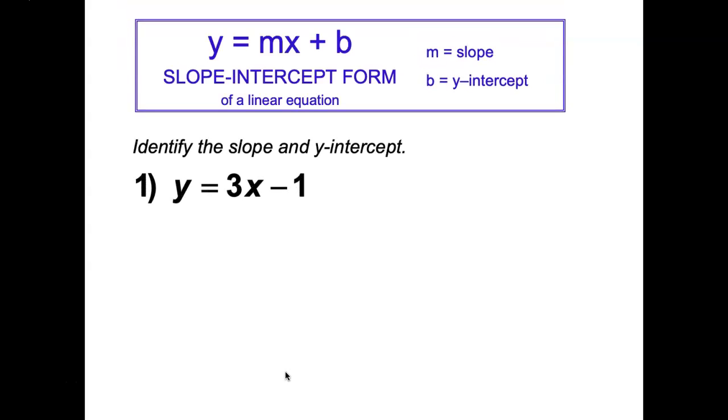Before we get started, let's review. Our form is y equals mx plus b, m being the slope and b the y-intercept.